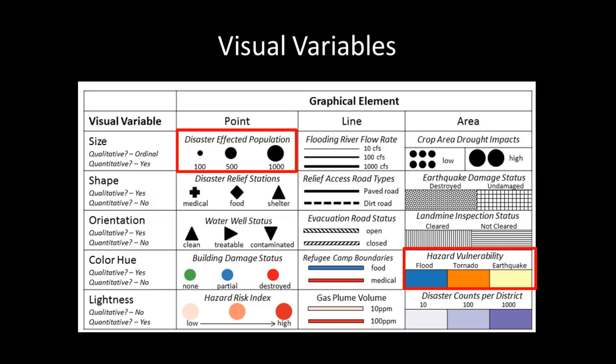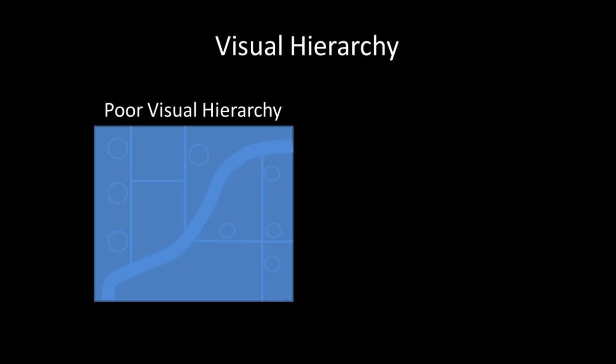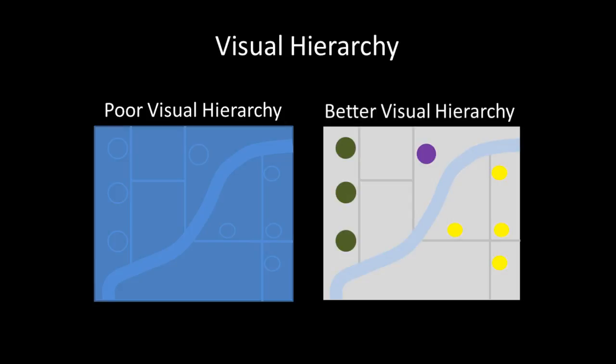I'll discuss how map features are arranged in a map display in terms of visual hierarchy and figure-ground relationships. Visual hierarchy is the idea that map features are presented in a manner that implies the relative importance of each feature, often achieved through visual contrast. This image shows an example of poor visual hierarchy — it is difficult to determine what the most important features are as there is little visual contrast between map features. By comparison, this image shows an improved visual hierarchy, where circular map features now create better visual contrast implying their importance relative to other features.